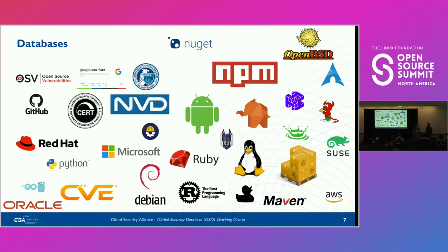This is part of the challenge: if you're an organization dealing with vulnerability data today, this is what you need to look at. Some of these are private — there's Snyk up there, there's Twist Lock, there's WhiteSource. Some are private, some are public. But this is the challenge: how do we take all of this data and turn it into something everyone can use? There's always the argument that we should all come together and have one thing, but competition is always good. I'm not saying we should have one particular source, but I do think that's too many.